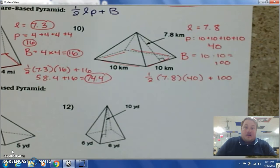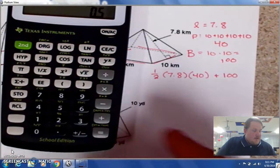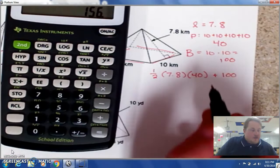1 divided by 2, times 7.8 times 40, gives me 156. And if I add 100 to that, I get 256.